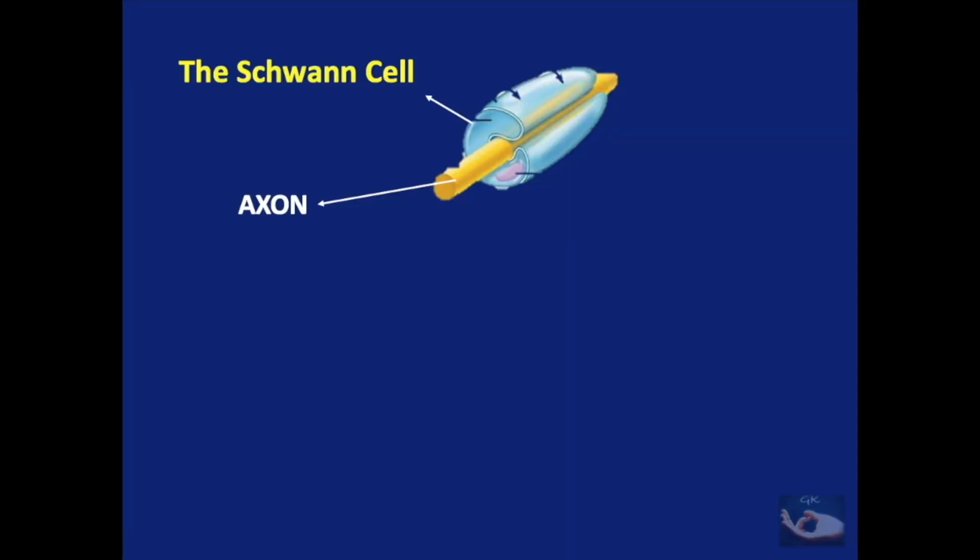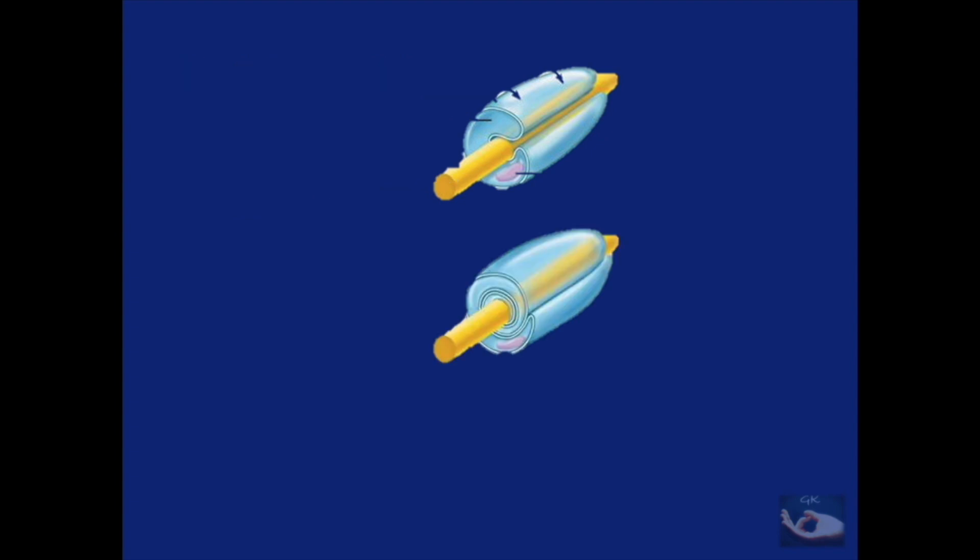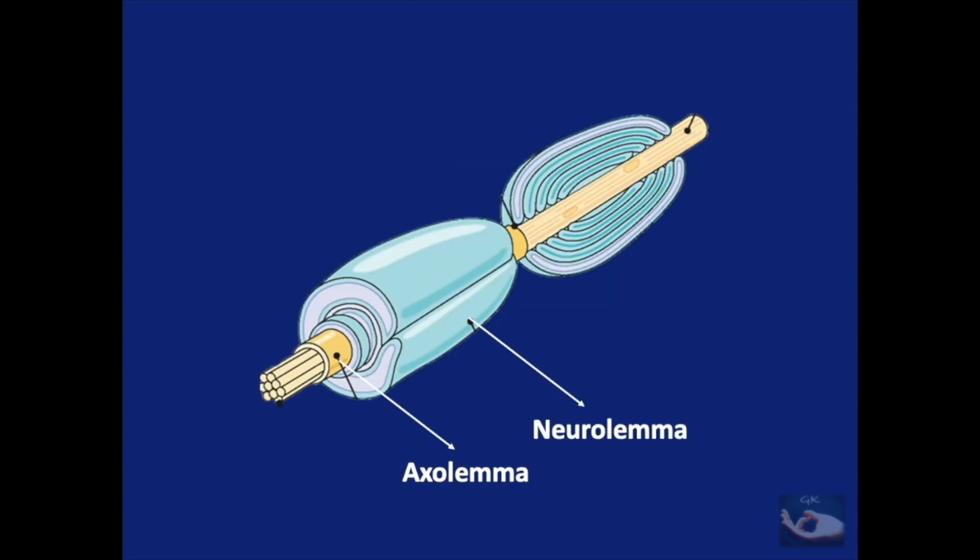The Schwann cell first ensheaths the axon and then continues to wrap itself around the axon in concentric layers. As this wrapping occurs, the nucleus is pushed to the peripheral portion of this myelin sheath and there are multiple layers of this sheath between the nucleus and the axon as can be seen in this diagrammatic representation.